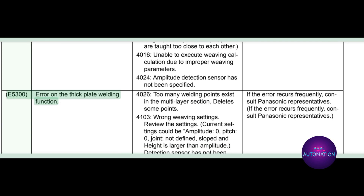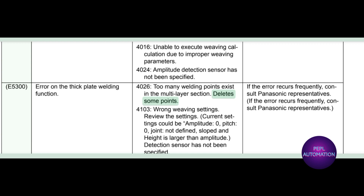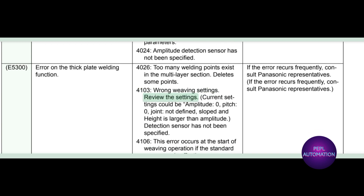E5300: error on the thick plate welding function. Subcode 4026: too many welding points exist in the multi-layer section. Delete some points. Subcode 4103: wrong weaving settings. Review the settings.